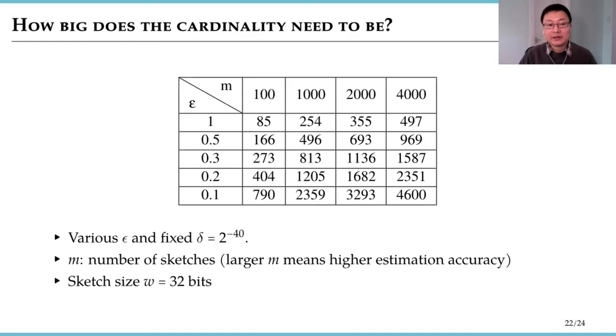One last thing I want to show. Remember I said that our protocol is differentially private if the cardinality to be estimated is large enough. Then how large is large enough? Here are some concrete numbers. But we can see in the table for reasonable epsilon value and small delta, the lower bound of the cardinality for differential privacy to hold is quite small.